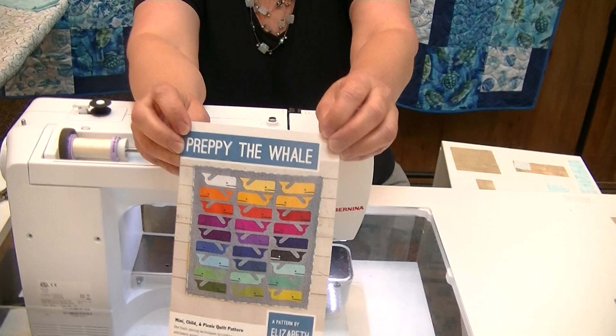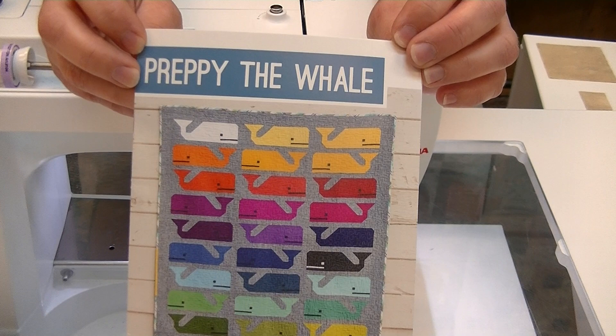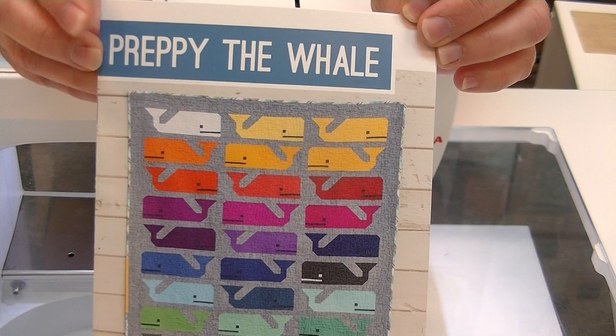Hi and welcome back to our creative videos. My name is Loretta Hayes and I'm from Hayes Sewing Machine Company in Wilmington, Delaware. Today we are going to do the sweetest little whale done by Elizabeth Hartman. He's called Preppy the Whale.